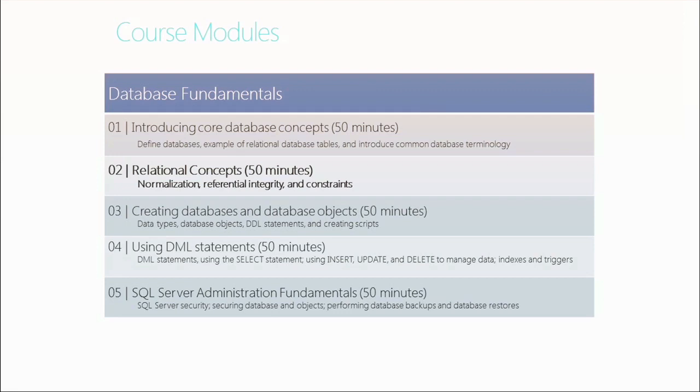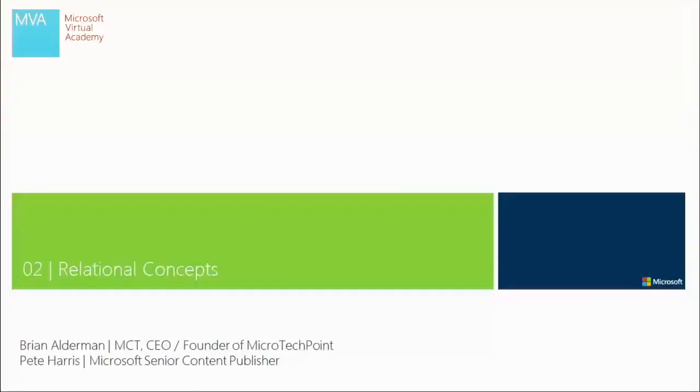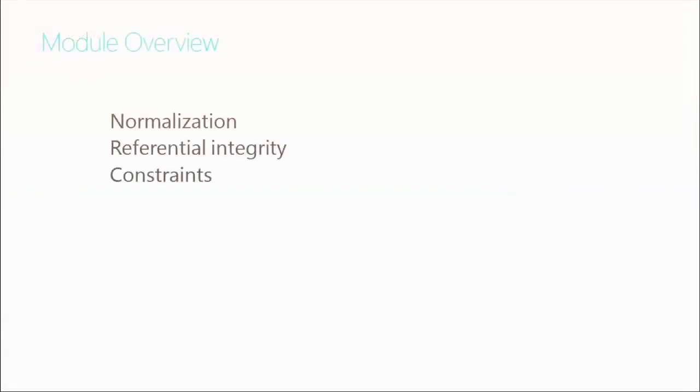We're going to introduce constraints so we have an idea of how they help with referential integrity. This is Module 2 of a five-module course. If you skipped Module 1, we talked about core concepts about databases. We'll be going on into fireworks demos about how you create objects and get information in and out of your database, and a bit about administration. Now we're going to get into some of the relational concepts — not quite data modeling yet, but the fundamental pieces you need to know before you can actually create a database.